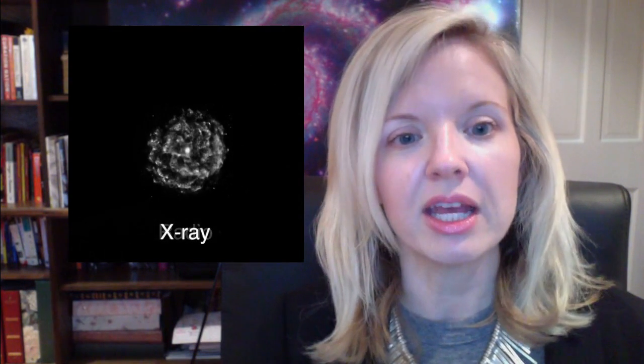Follow the link on this page to see an image directory of supernova remnant Kes 73. This directory has four images, each showing different kinds of light. These images appear in grayscale because astronomers take pictures that trace light at specific wavelengths.